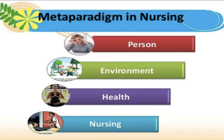The meta-paradigm theory of nursing is a set of theories or ideas that provide structure for how a discipline should function. For a nursing discipline, these theories consist of four basic concepts that address a patient as a whole, the patient's health and well-being, the patient's environment, and the nursing responsibilities. We must understand the meta-paradigm theory of nursing and its reflection in Swanson's five processes of care.